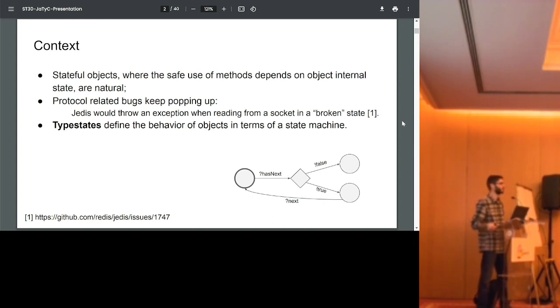As you probably are aware, it is very natural in object-oriented languages to create objects where the internal state influences the methods that may be called and the sequence of method calls that are allowed. A classic example is of an iterator where one needs to call has next method before calling next, otherwise an exception might be thrown. We use type states to precisely define the behavior of these objects in terms of finite state machines.